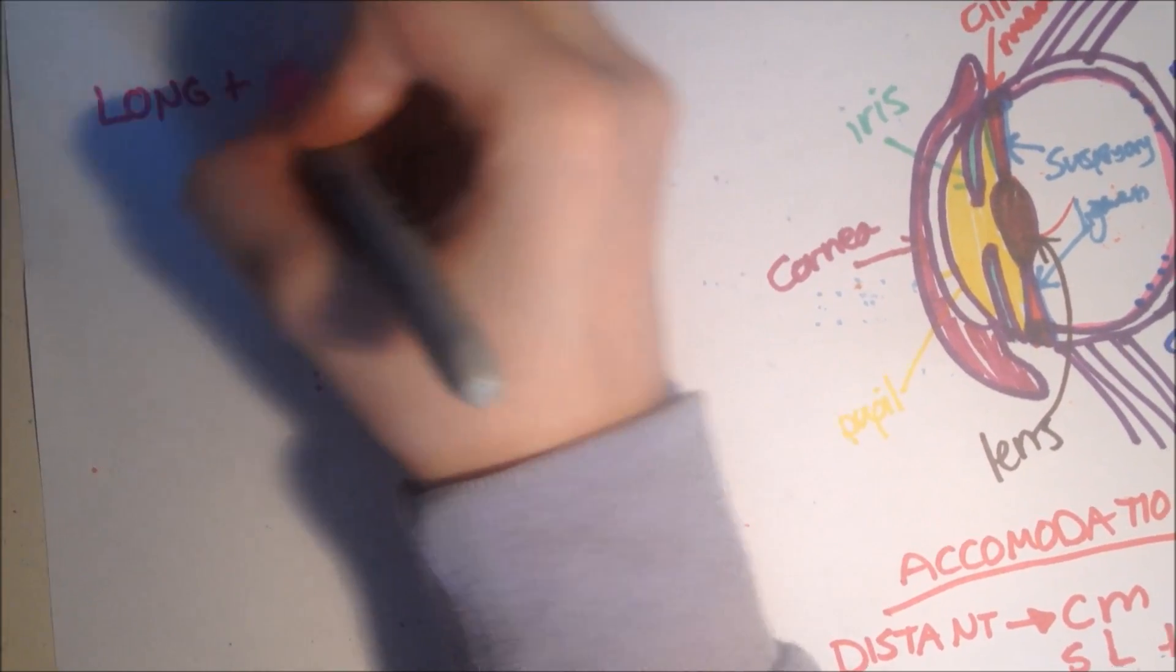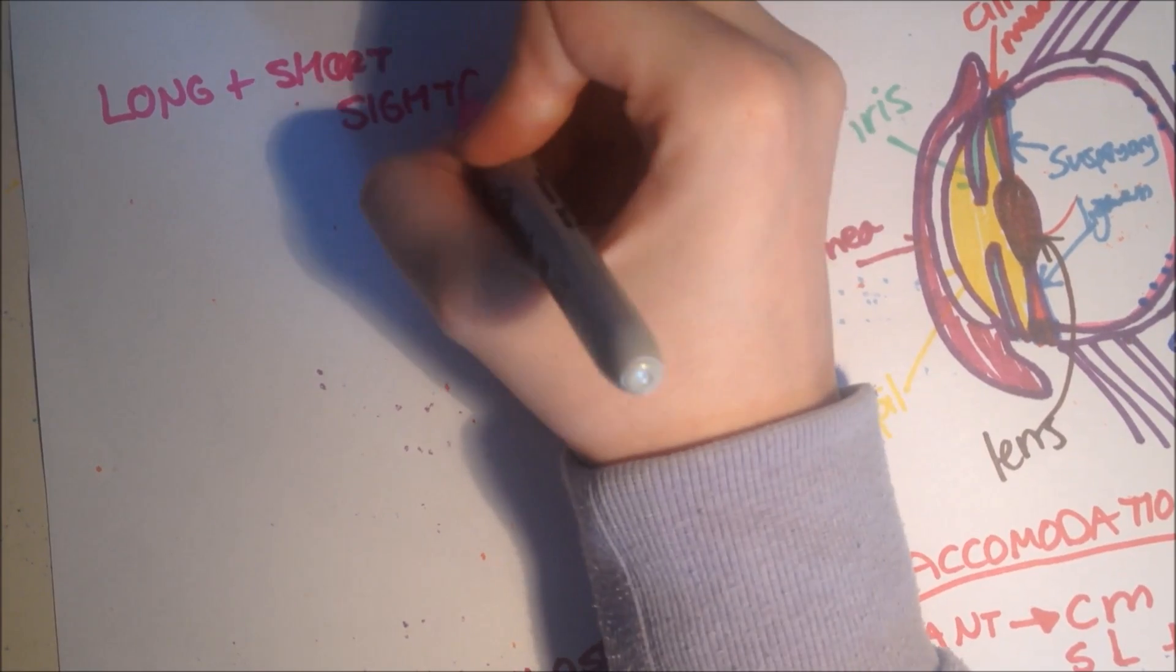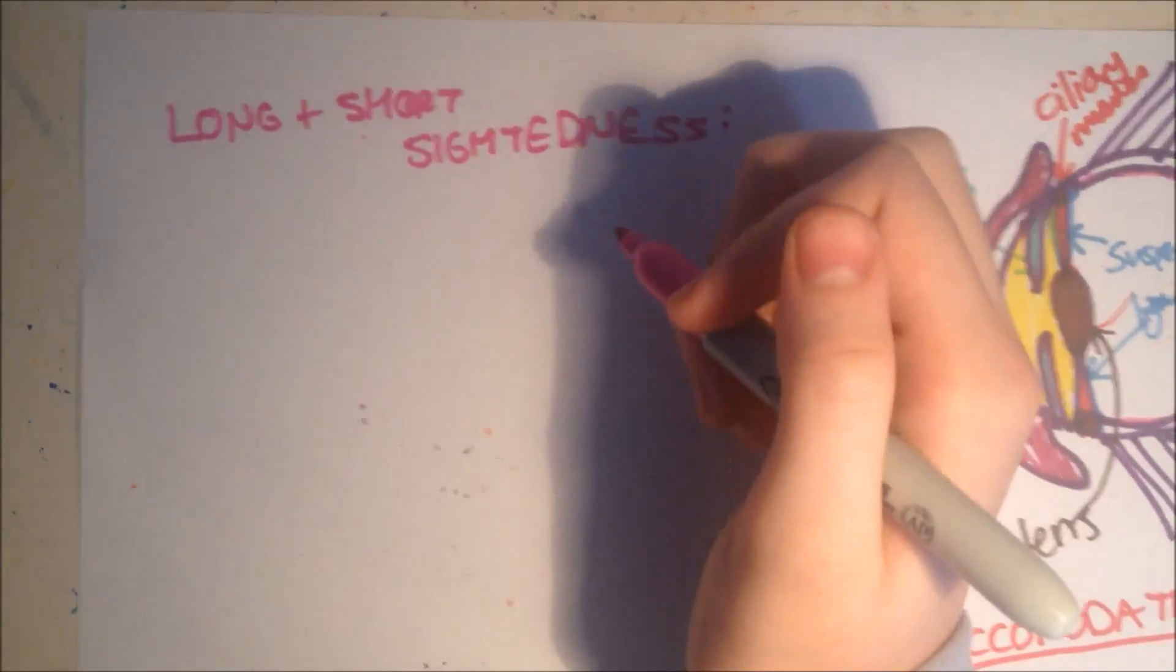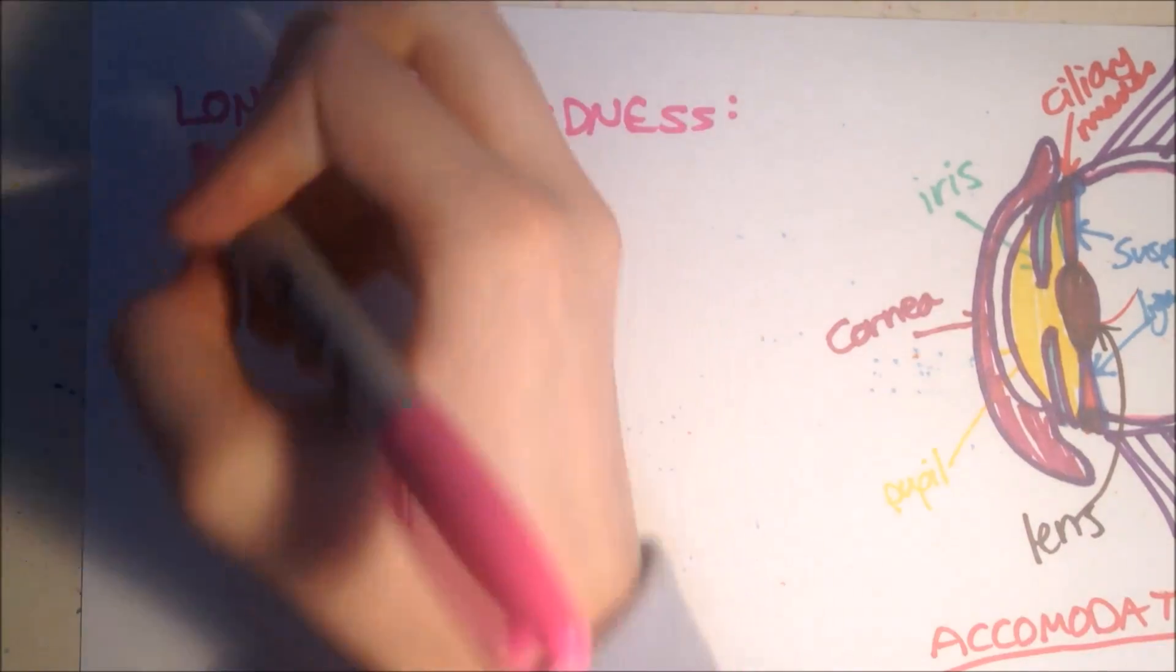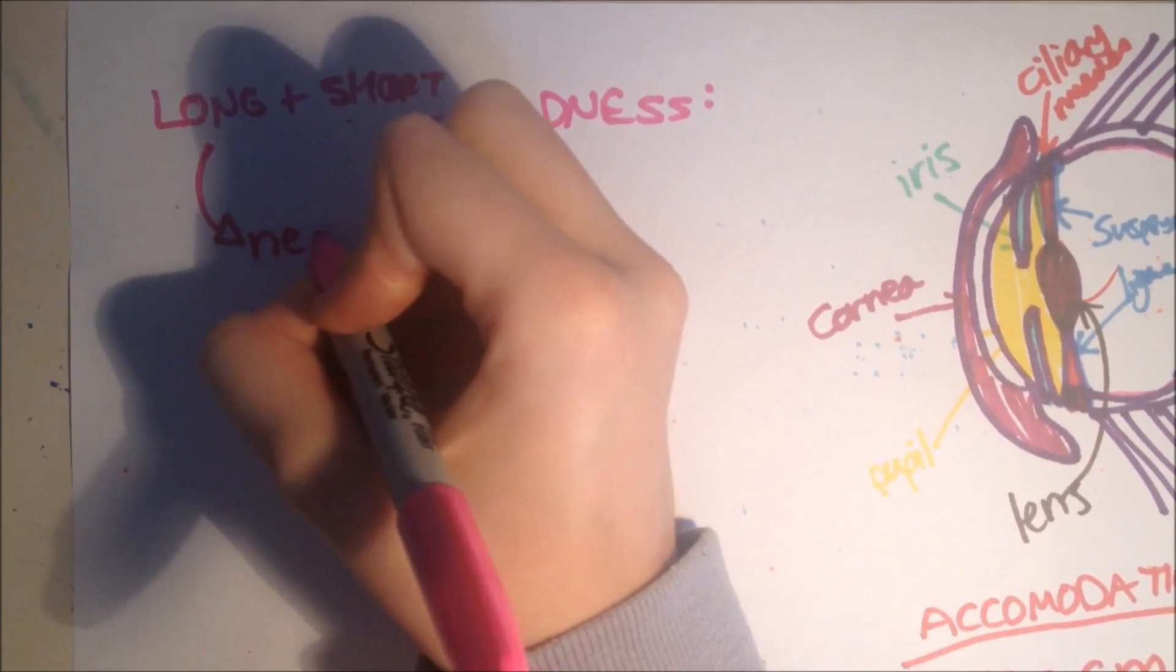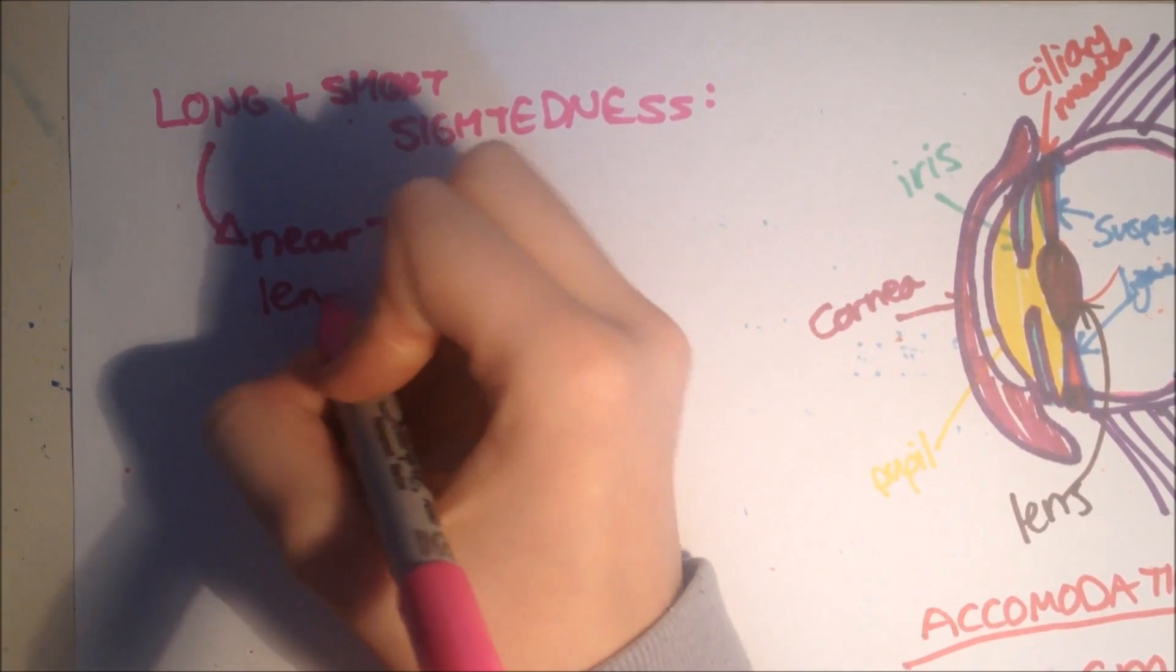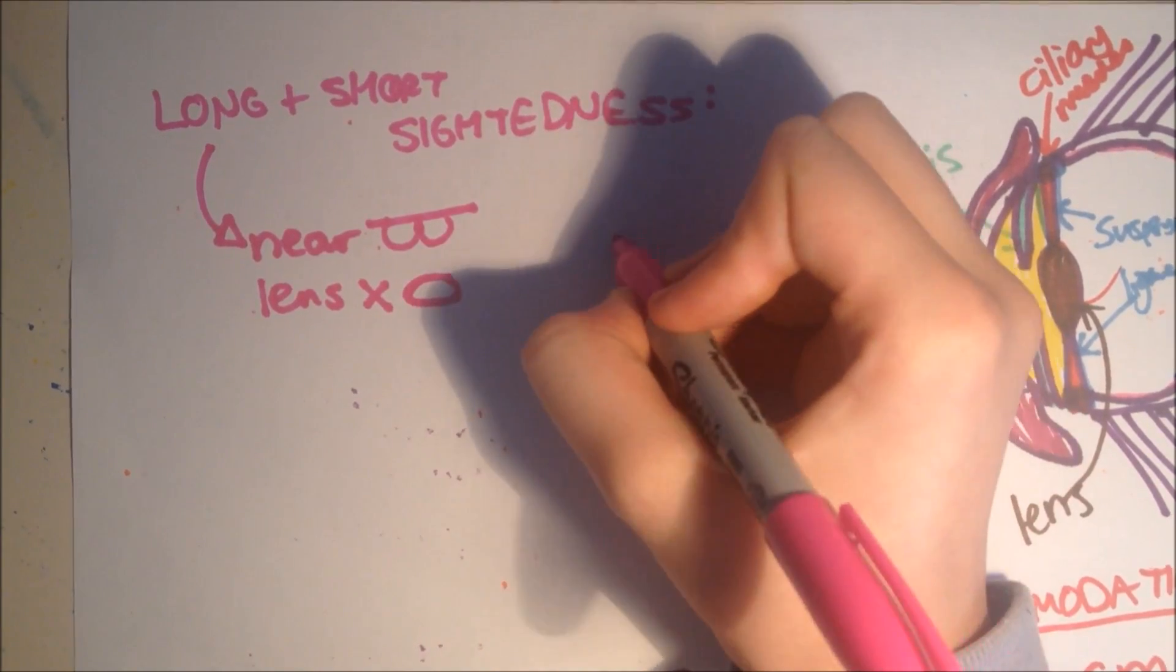long and short sightedness. Some people are long and short sighted, which occurs when we're unable to focus on near objects or distant objects. So to start with, long sightedness is near objects. Class is great. So this occurs when the lens is the wrong shape, and it doesn't bend the light enough, or the eyeball is too short, so the lens doesn't work properly.